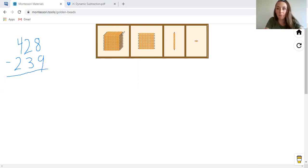So to set for subtraction, we're just setting up our top number. So we'll do 428. We need eight unit beads for our one spot.